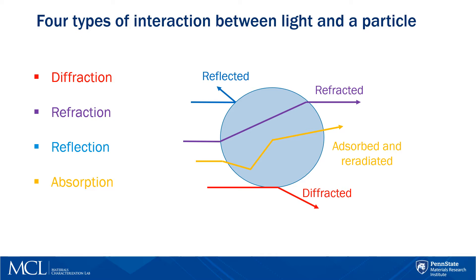Out of these four interactions, diffraction and refraction give us information about particle size. We do not use reflected light because it does not provide any useful information.